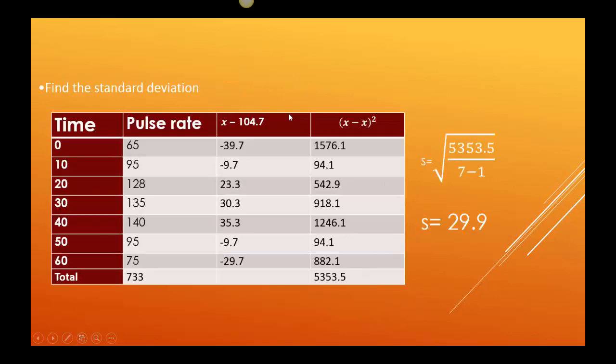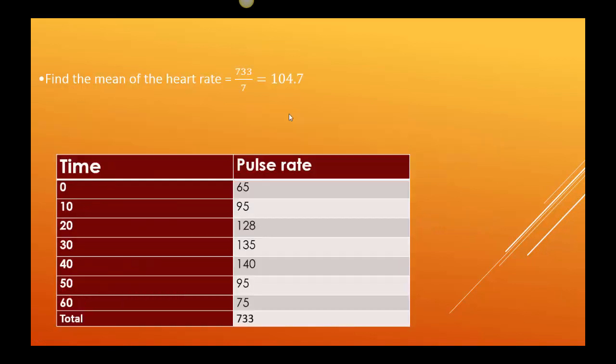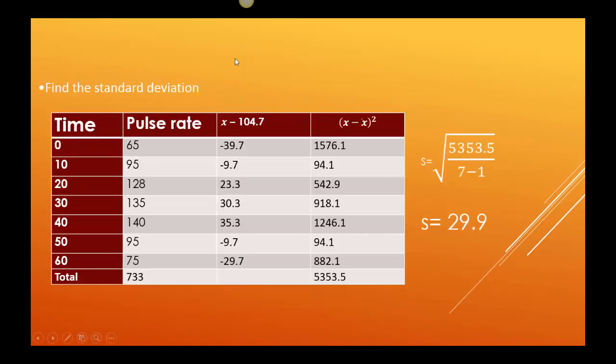And then the standard deviation says how much higher or lower did it go? So here I need to use the mean that I just found, 104.7. I'm going to subtract that from each of the pulse rates that I had. So you can see that's what I recorded in the third column. So the first column's the time, the second column's the pulse rate, and the third is subtract the mean of 104.7. If you were to add it up, you would get zero, but we're not going to do that. We're going to square it. So you can see I have my pulse rate, subtract the mean, and square them. Add all of those up.